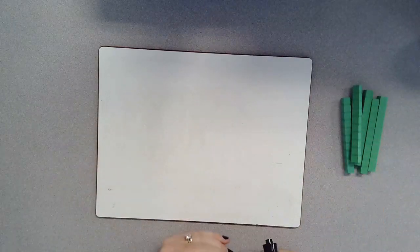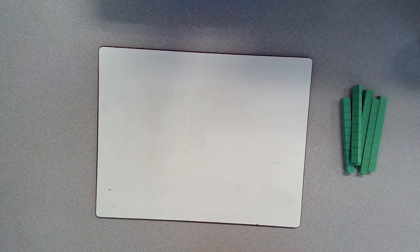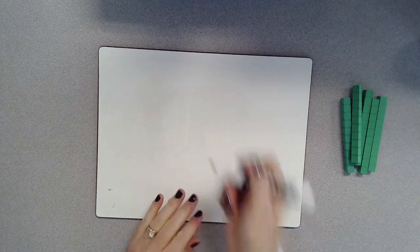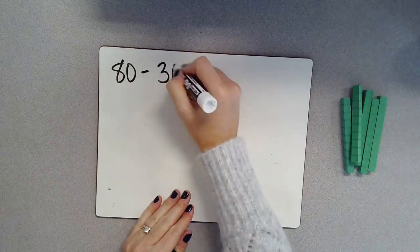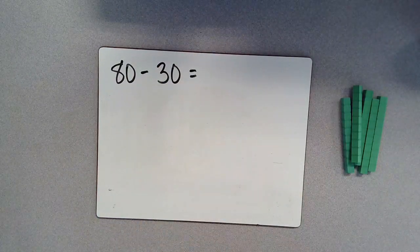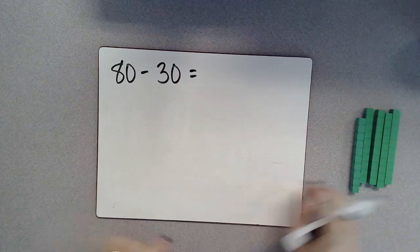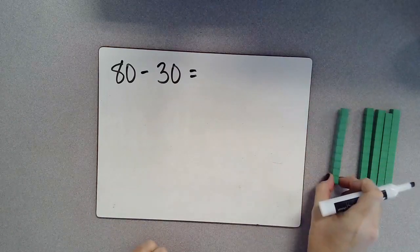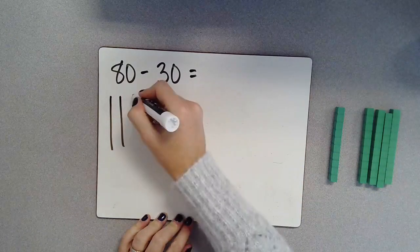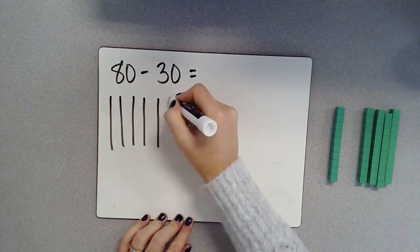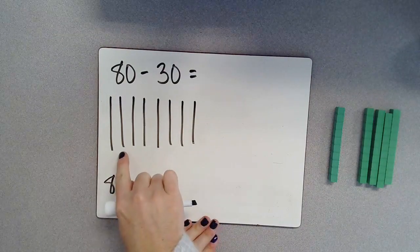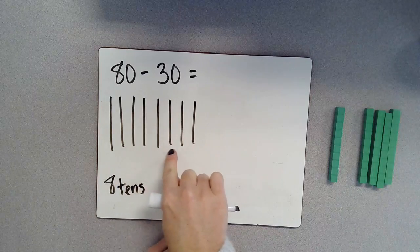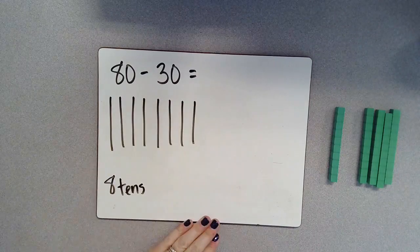All right, so this time instead of using my place value blocks, I'm going to be drawing out the place value blocks and show you how to mark those out when we're doing these takeaway problems. So let's start with our problem. So I have 80 take away 30. So I'm going to draw out my 10 rods here. So 1, 2, 3, 4, 5, 6, 7, 8. So I have 8 10s here or 10, 20, 30, 40, 50, 60, 70, 80 ones.